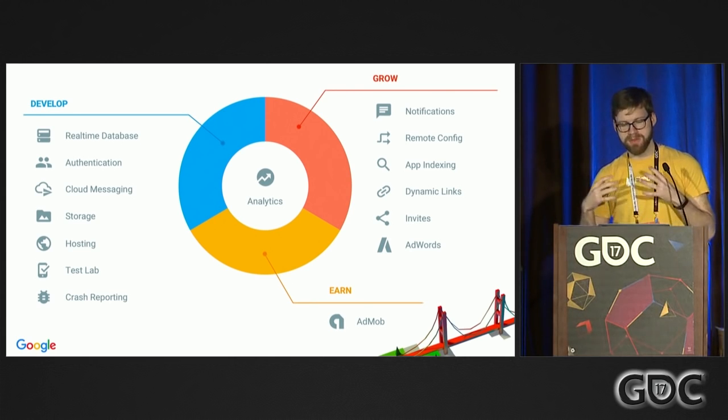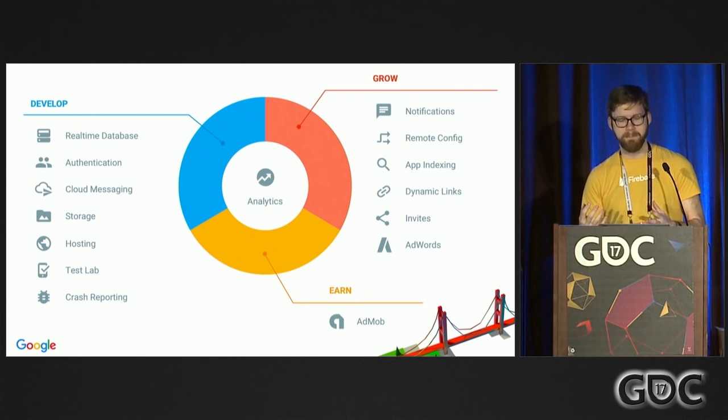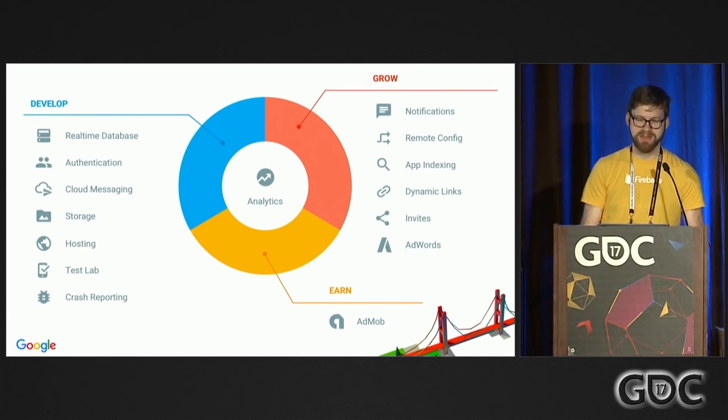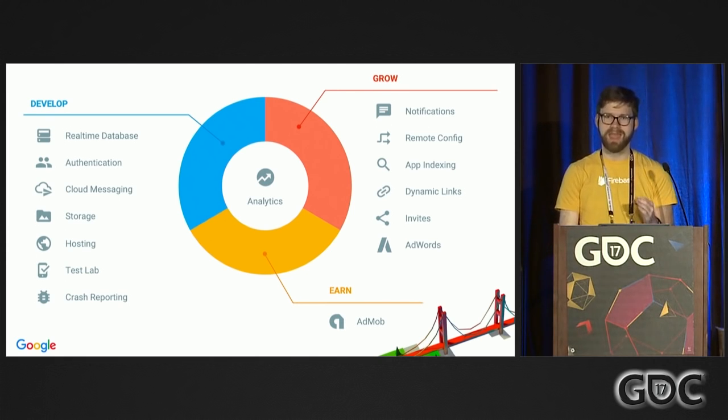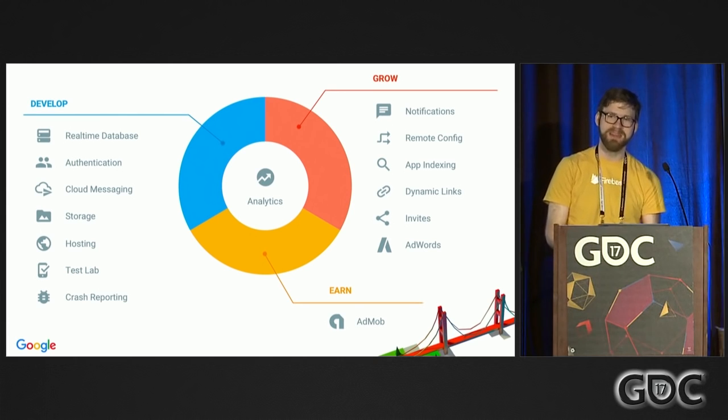Before going further, I want to talk about the philosophy of Firebase and what this platform means in terms of mindset. We have all these features — the develop, grow, and earn pillars — but at the core, we have Firebase Analytics. It's the core of this graphic, but also a core philosophy. Analytics as a concept — knowing your users and understanding what they're doing — is really important to building a product people love. But most analytic solutions stop short of giving you something actionable. You can watch what people are doing, but it often doesn't result in changes to the experience for those users, and that's defeating the point.